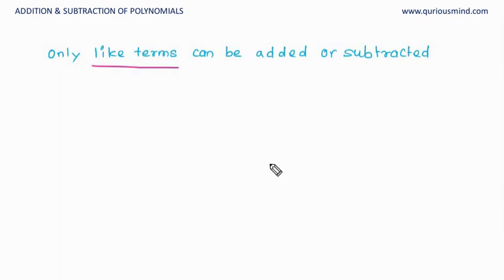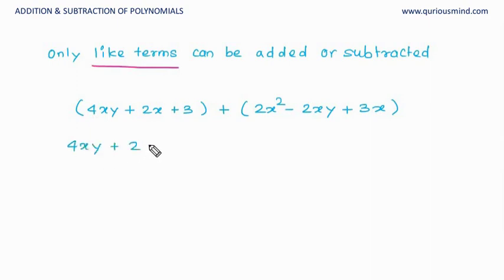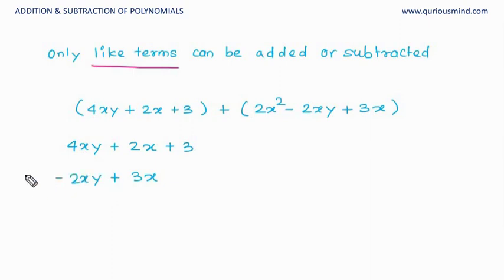So let's take an example to see how we do that. We have these two polynomials — two expressions — and we want to add them. There are two different ways to do it. First, the way where we arrange them one below each other, but we have to arrange the like terms one below each other. So 3x is a like term with 2x, minus 2xy is a like term with plus 4xy, and 2x square goes below, with nothing matching from the other expression.